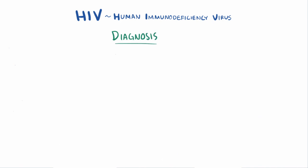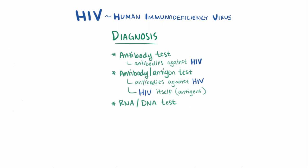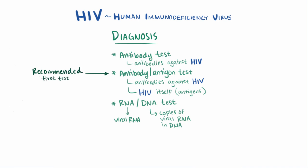For diagnosis, there are a few types of HIV tests: antibody tests, antibody/antigen tests, and RNA/DNA tests. Antibody tests look for antibodies the body made against HIV. Antigen tests look for the virus directly. Antibody-antigen tests detect both. RNA tests screen for viral RNA, and DNA tests look for copies of the viral RNA, since HIV is a retrovirus that copies its genetic material into DNA. For screening purposes, the recommended test is the antibody-antigen test, which is better at identifying early infection, followed by a confirmatory test for antibodies or nucleic acids if the first test is positive.